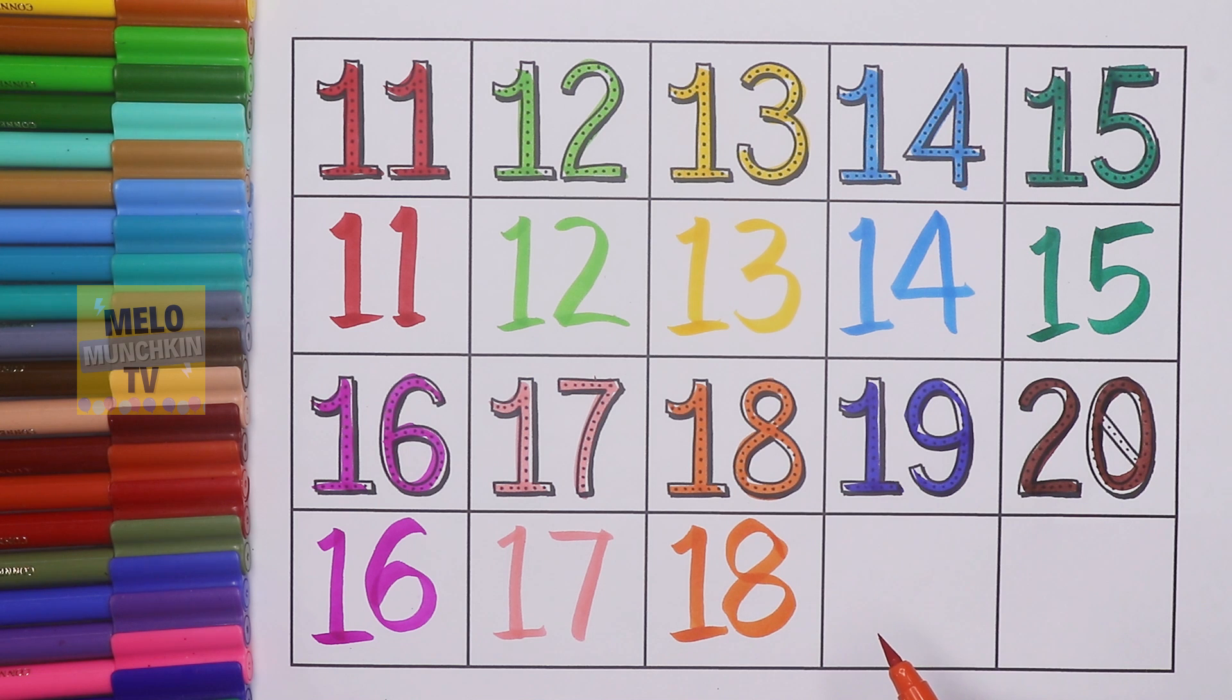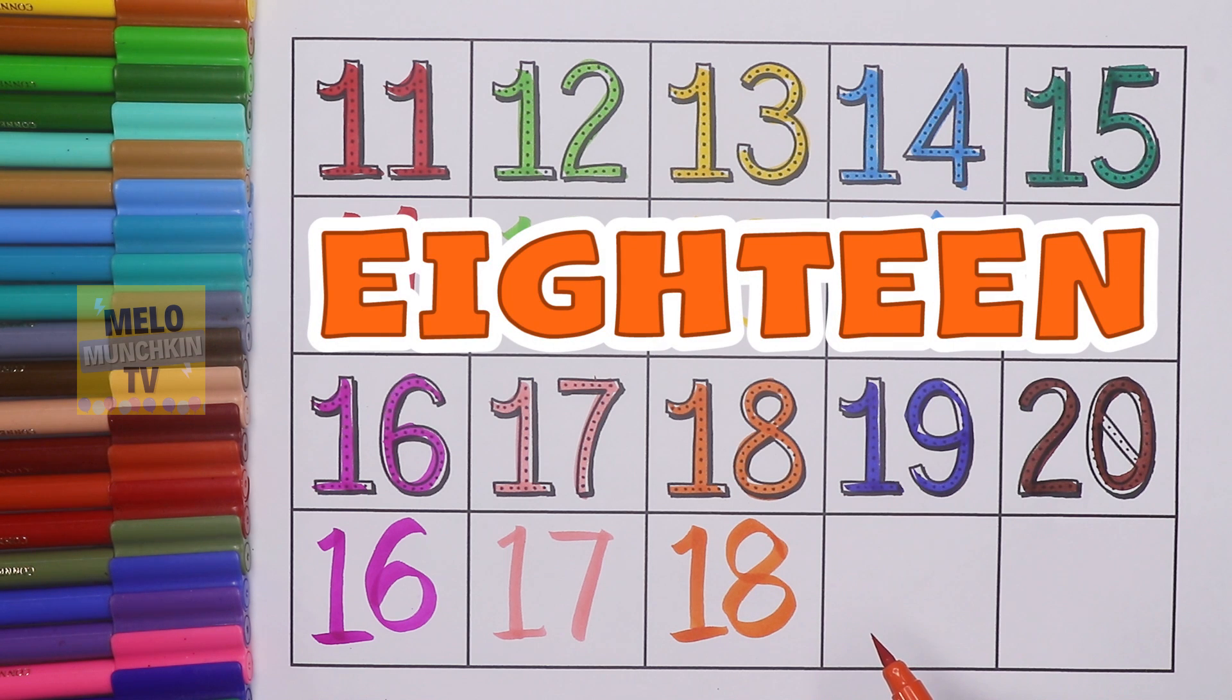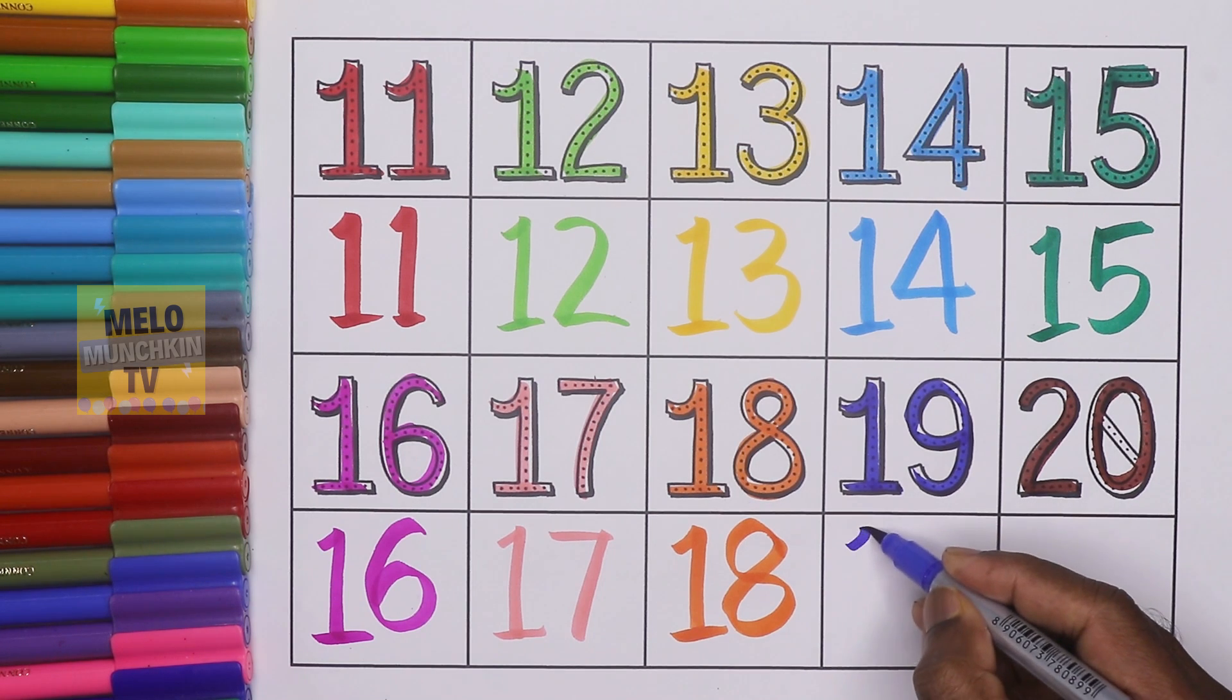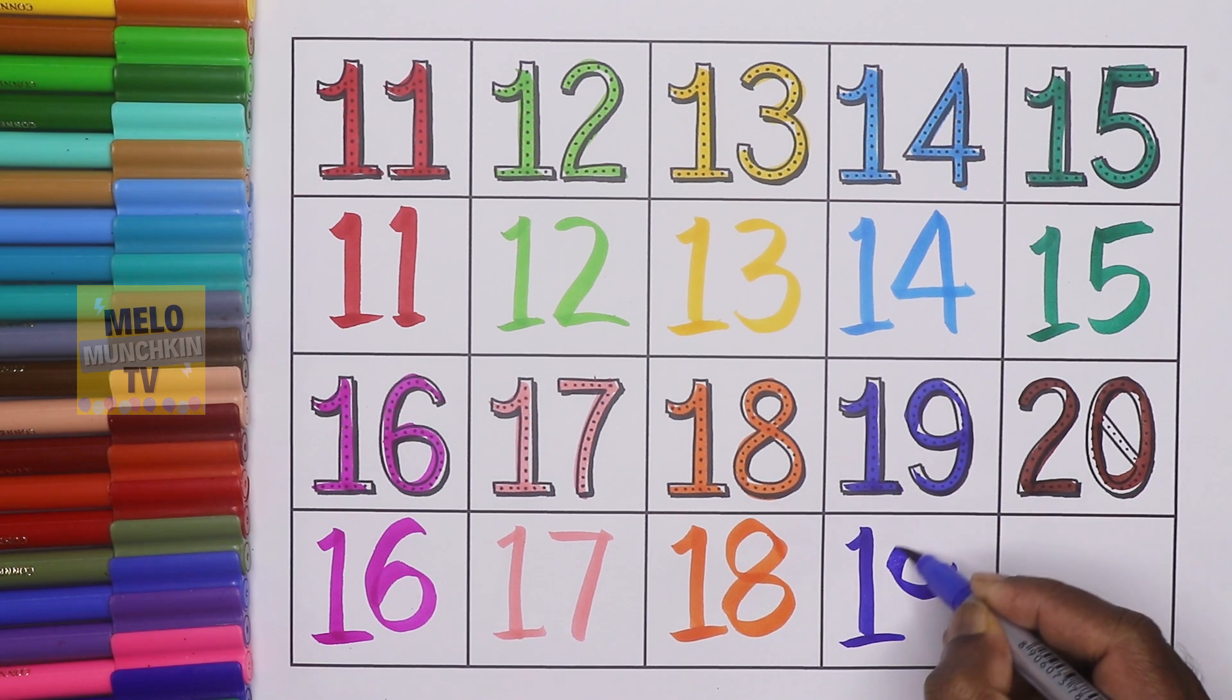Next, 18, 1-8, 18, and the spelling is E-I-G-H-T-E-E-N, 18. This is 19, 1 and 9, 19, and the spelling is N-I-N-E-T-E-E-N, 19.